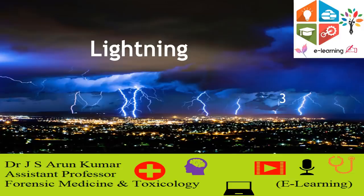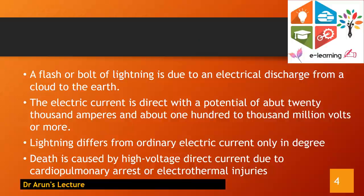Today's topic is about lightning and it is part of a thermal test. Lightning means a flash or an upvolt of lightning. It is due to an electric discharge from a cloud to air. The electric current is direct with a potential of about 20,000 amperes and about 1,000 to 1,000 million volts or even more.